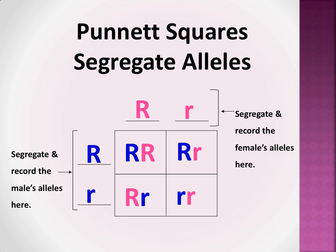So what is a Punnett Square? A Punnett Square is nothing more than a tool. It's used to predict the probable outcomes of a genetic cross.